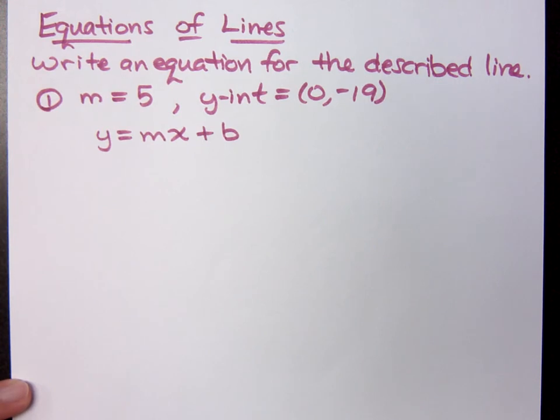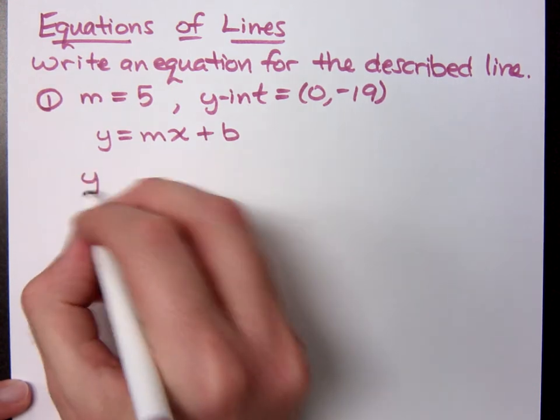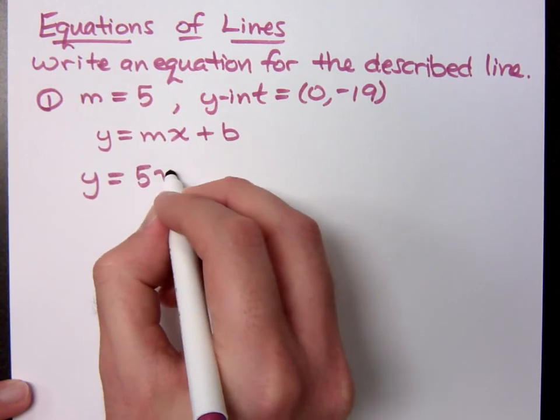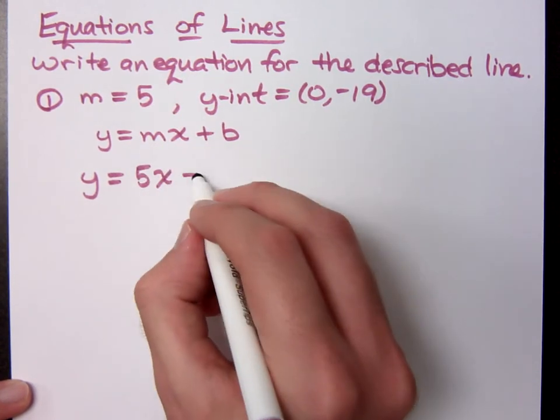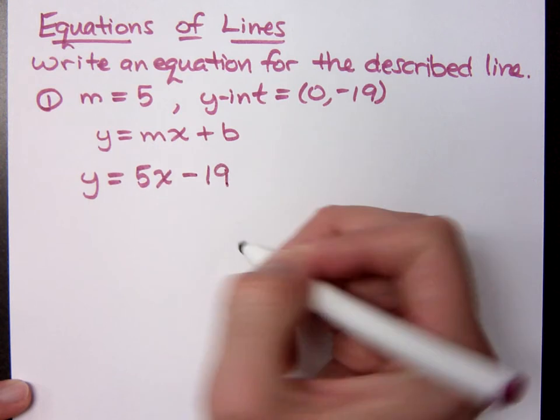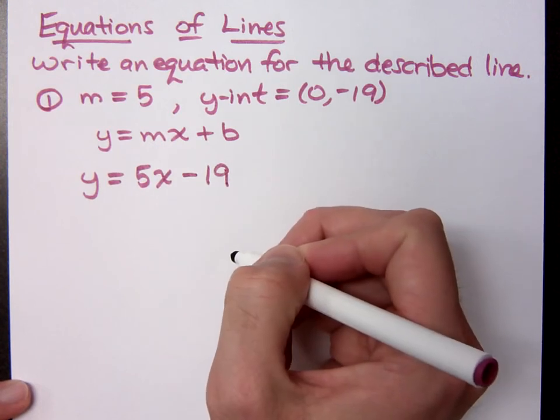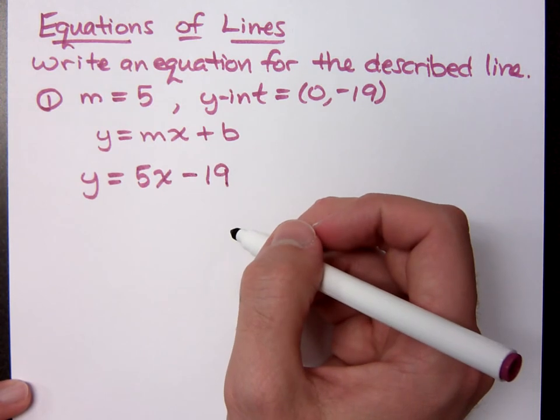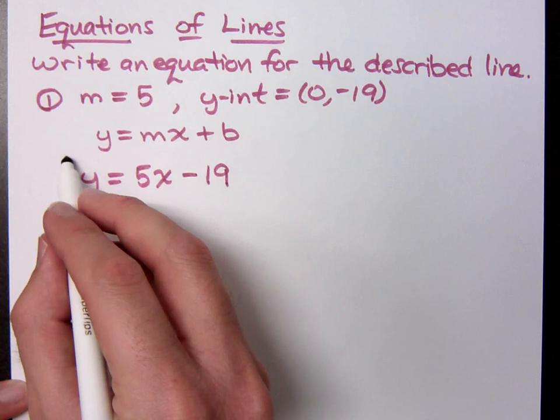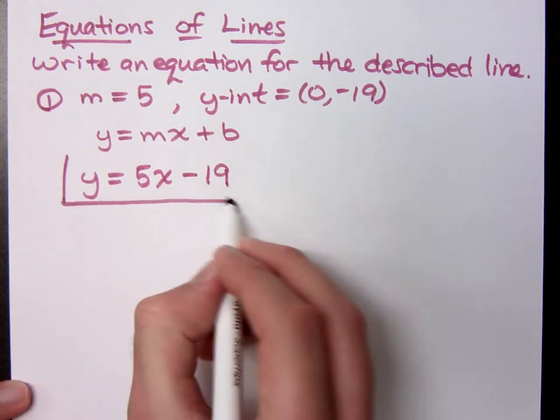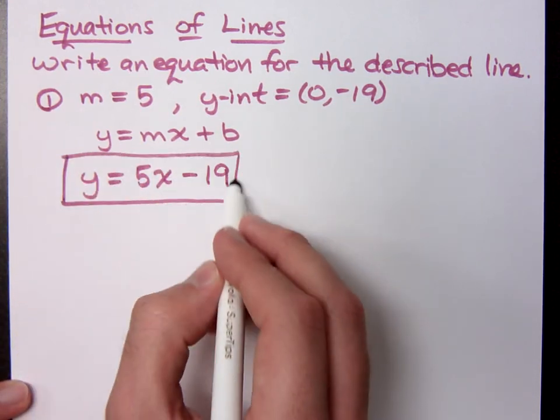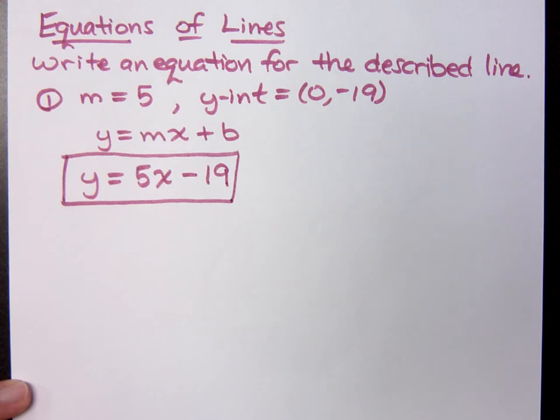Maybe y equals 5x minus 19. y equals 5x, because your slope is 5, and then minus 19. Do y'all agree? Uh-huh. So, y equals 5x minus 19. That's too easy, right?